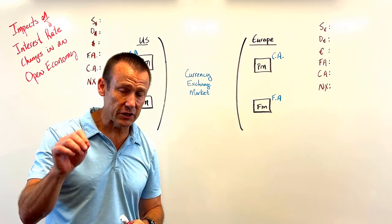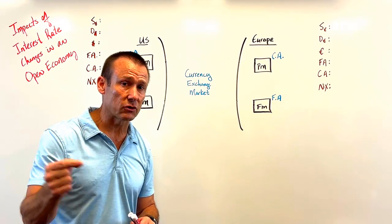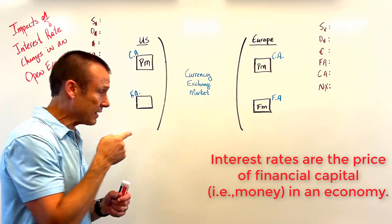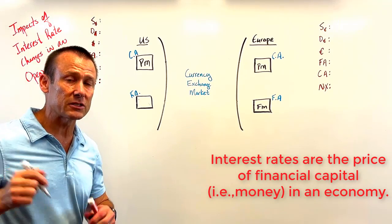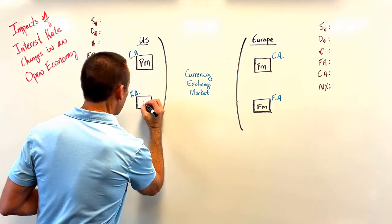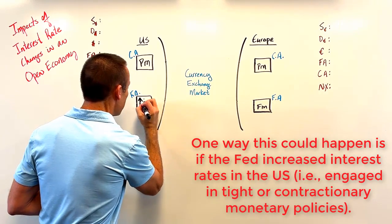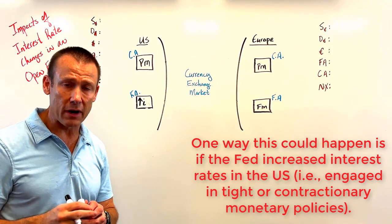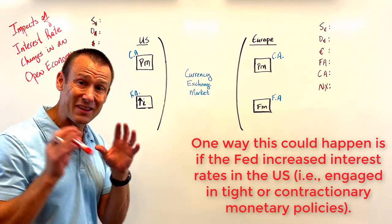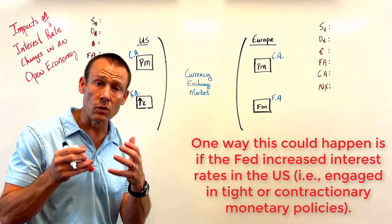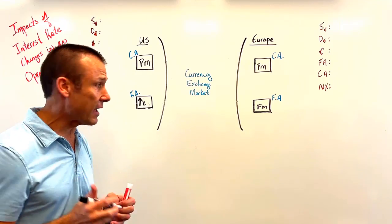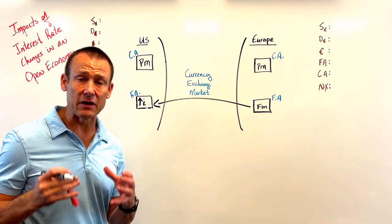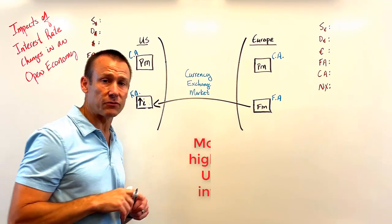When the interest rate changes, the interest rate is the price of financial capital, so I associate that with our financial market. I'm going to put that interest rate change right there in the financial market. Let's say the interest rate goes up in the United States. Prices coordinate economic activity, and interest rates are prices. When that interest rate goes up — maybe because of tighter, contractionary monetary policy — money is going to flow towards U.S. financial markets. We're going to get those capital inflows coming in.